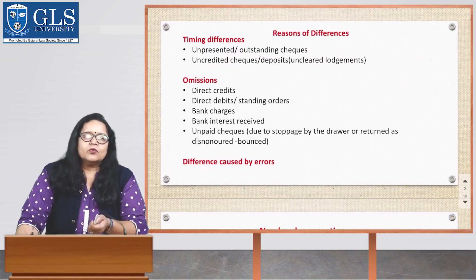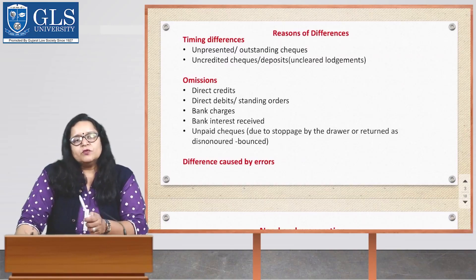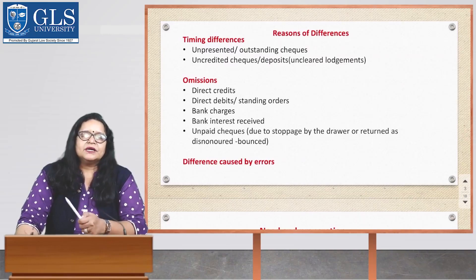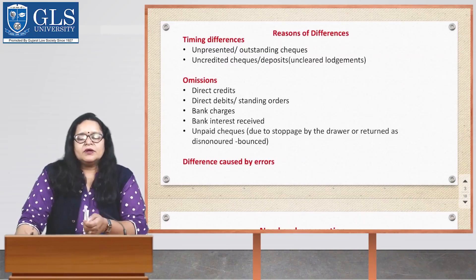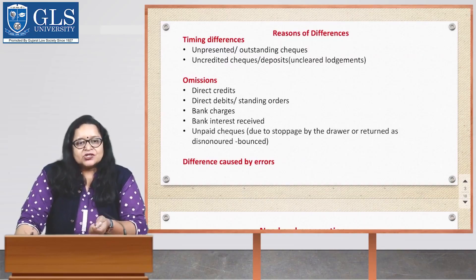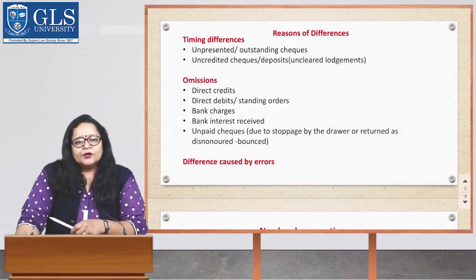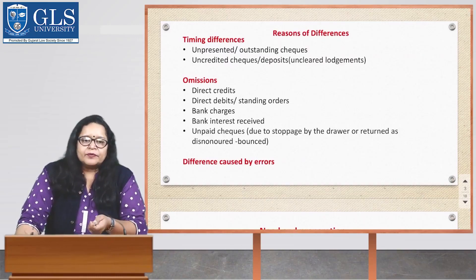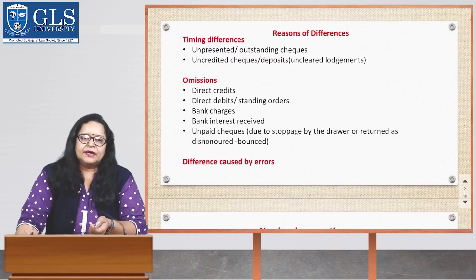Now let us discuss about omissions. Omissions are items which arise in the bank statement before they are recorded in the cashbook. Such unrecorded items include direct credits, direct debits as per standing orders, bank charges, bank interest received, and unpaid checks due to stoppage — not by the drawer — or returned as dishonored, popularly known as bounced checks.